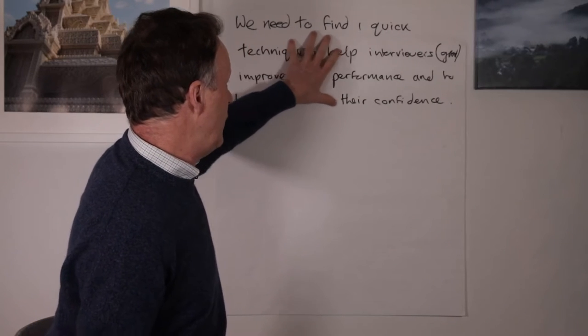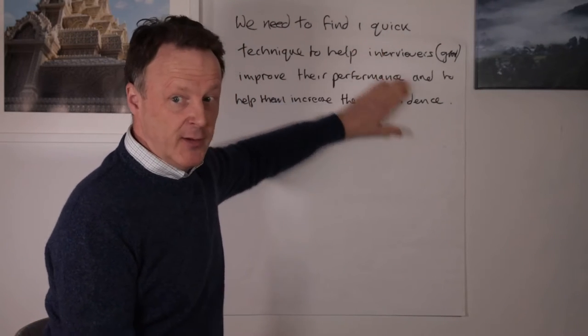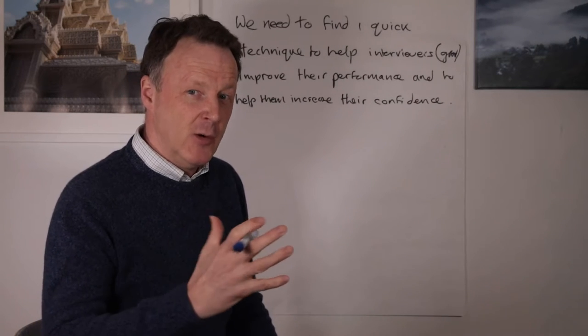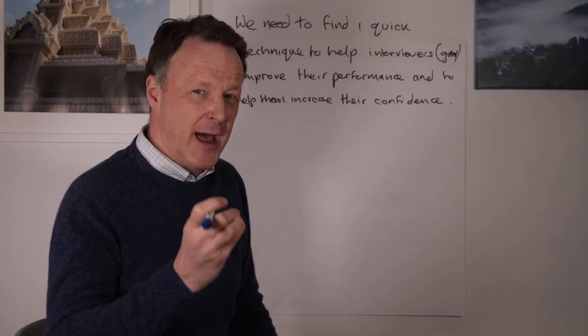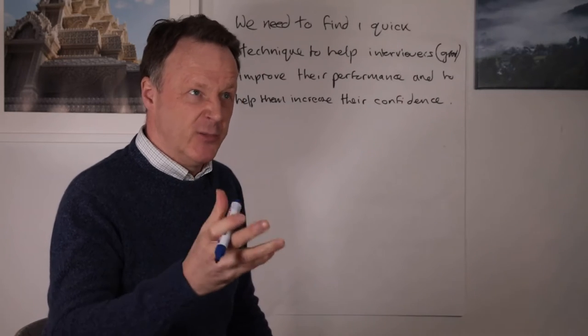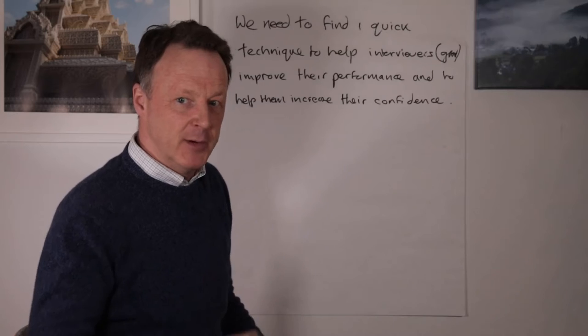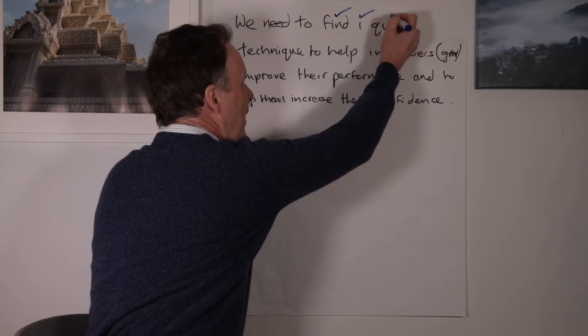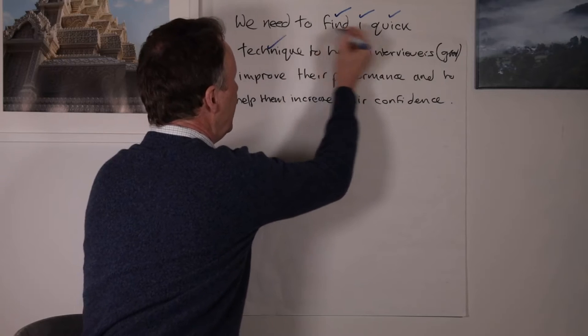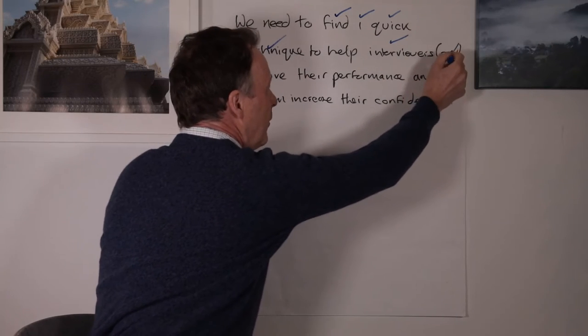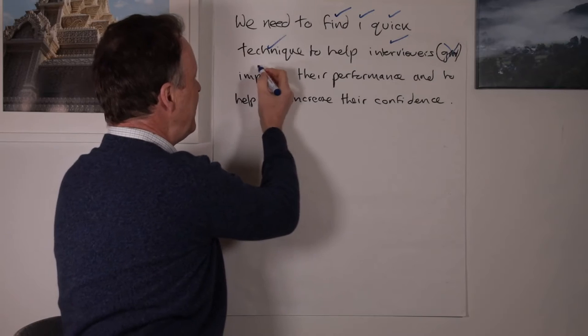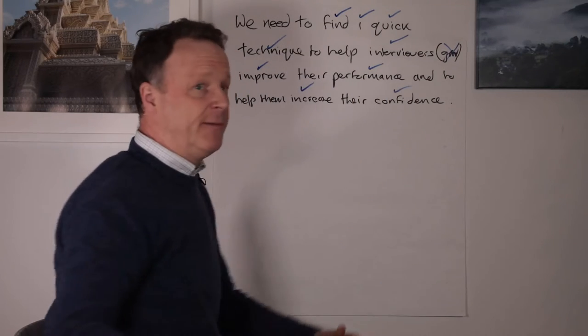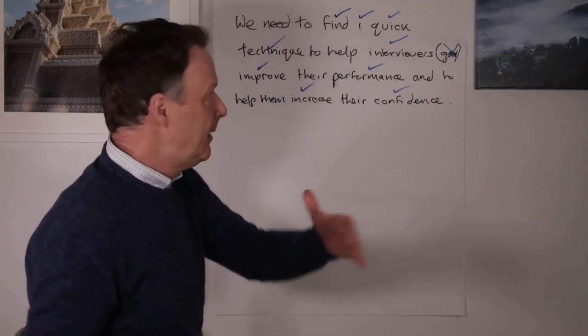So the first secret is deep filtering. So not record everything, but just to filter out what, or rather filter in, depending which way you're looking at it, but to identify the important information. And here for me, I would identify find one quick technique, help interviewers. I probably wouldn't want good because I'd know that by default, improve performance, increase confidence. Now it all filter, deep filter differently, but this is what I would do.